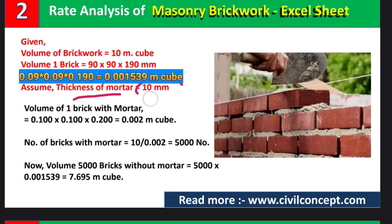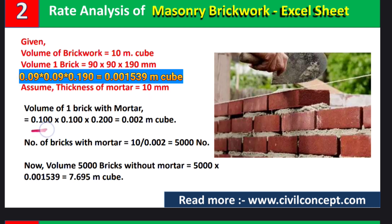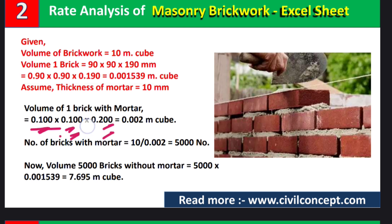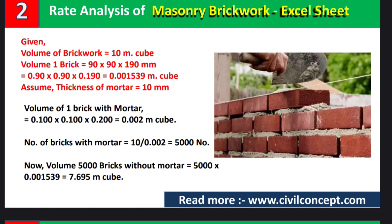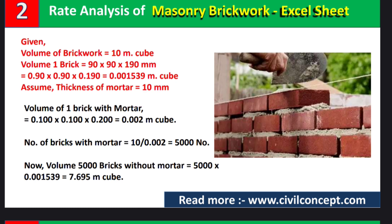Assuming mortar thickness of 10 mm, after adding 10 mm to all dimensions: 90 mm becomes 100 mm, height becomes 100 mm, and length becomes 200 mm. Multiplying these together gives 0.002 cubic meters — this is the volume of one brick with mortar. The previous value 0.001539 is the volume of one brick without mortar.